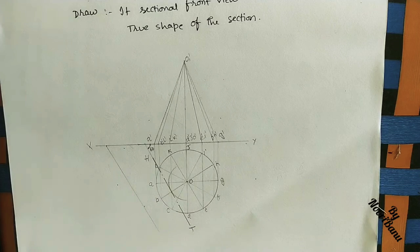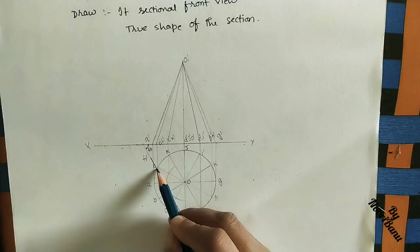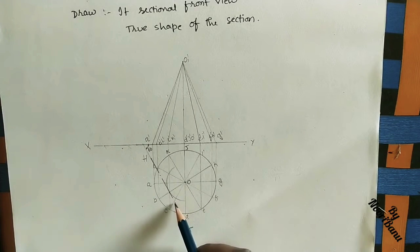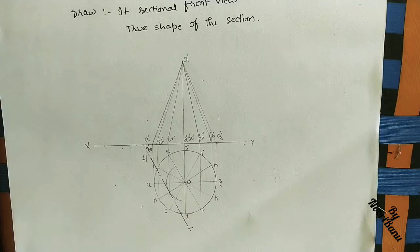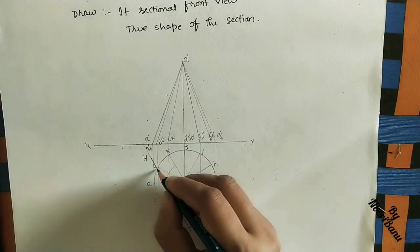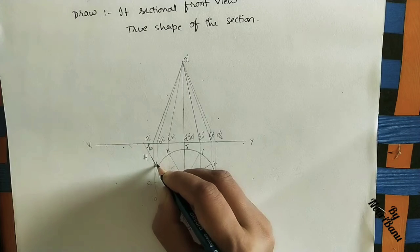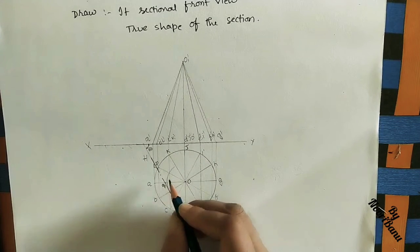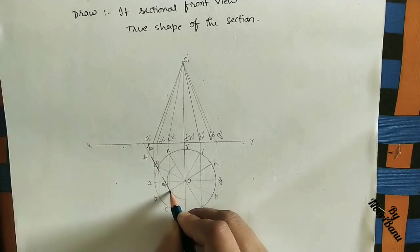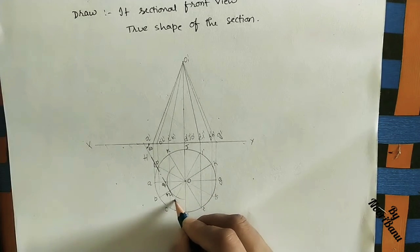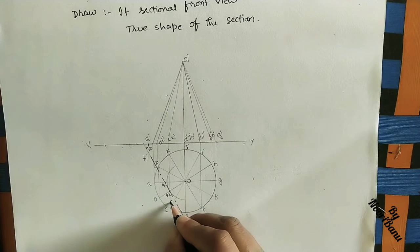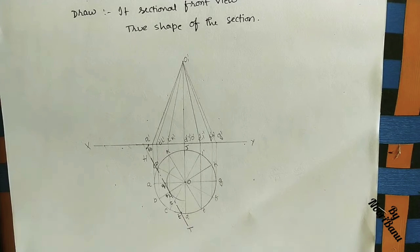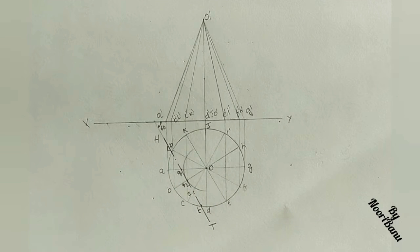This cutting plane cuts the solid at several intersection points. Mark the initial point on the circle as P, the intersection point on OA as Q, the next point as R, then S, and then T. So P, Q, R, S, and T are the intersection points in the top view.